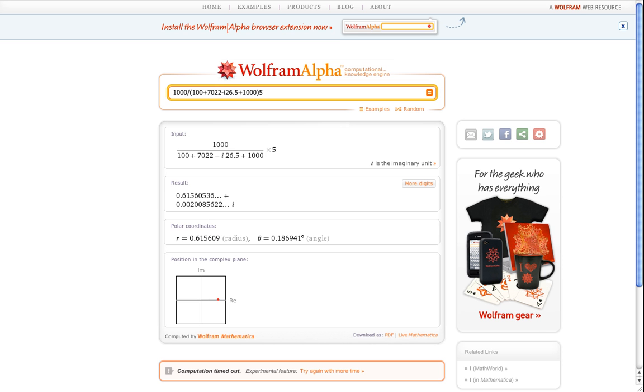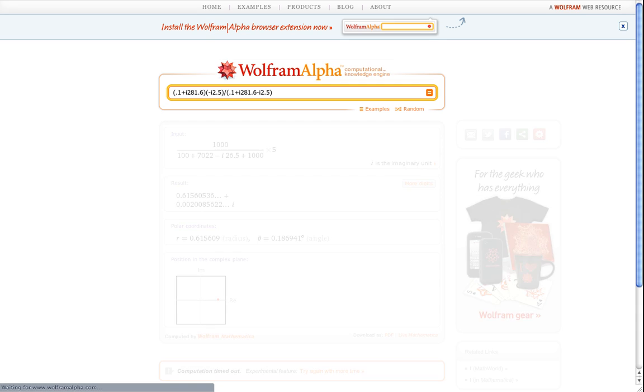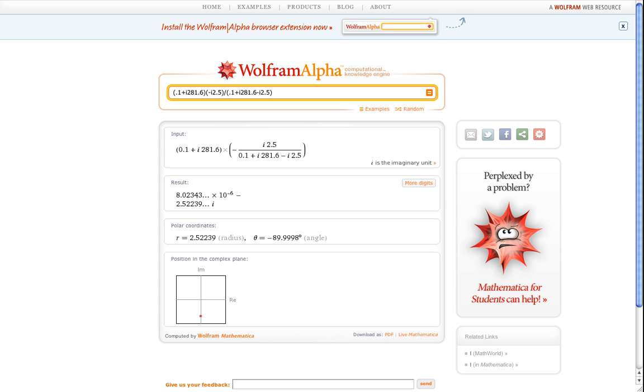Okay, and if I work this out with Wolfram Alpha, I get 0.1 ohm plus i times 281.6 times minus i 2.5 divided by 0.1 ohm plus i 281.6 minus i 2.5. And that gives me an equivalent impedance of 8 times 10 to the minus 6 ohms minus j 2.52 ohms.